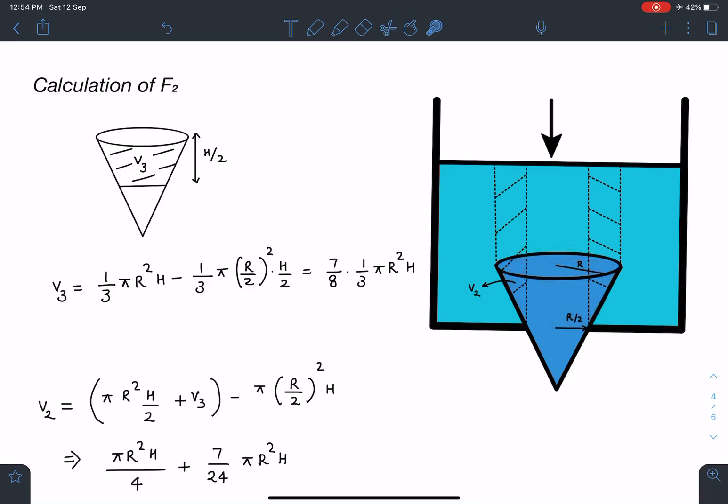So what I'm going to do is I'm going to calculate volume of this much part of the cone. First I'll calculate this much part of the cone, I'm calling it as V3. So that is very simple: total cone minus this smaller cone. So I'm not explaining the calculations here, so you can see you are going to get this value. It's very simple, very straightforward also.